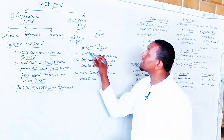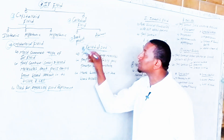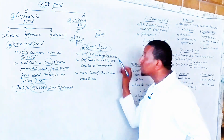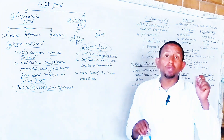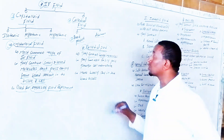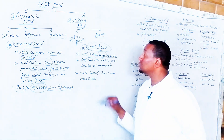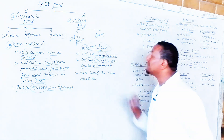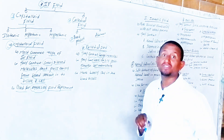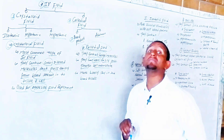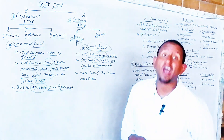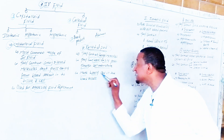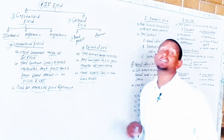The second type is colloidal fluid. Colloidal fluids contain large molecules. Because of these large molecules, colloidal fluid cannot easily pass through the cell membrane and is more likely to stay within the blood vessels.